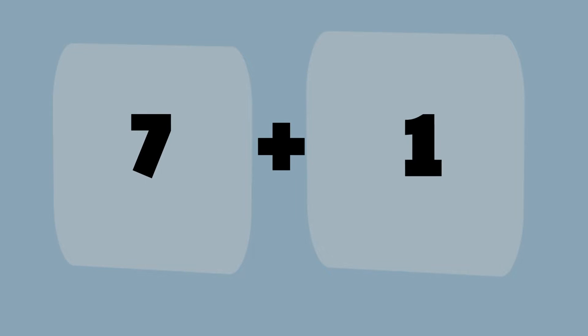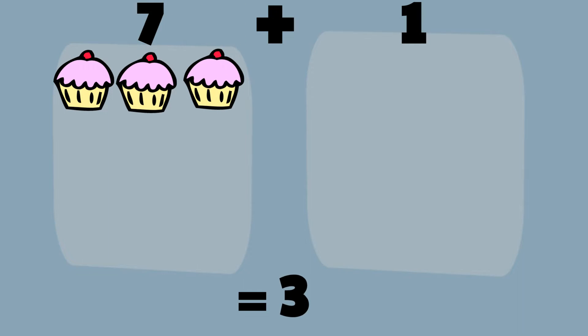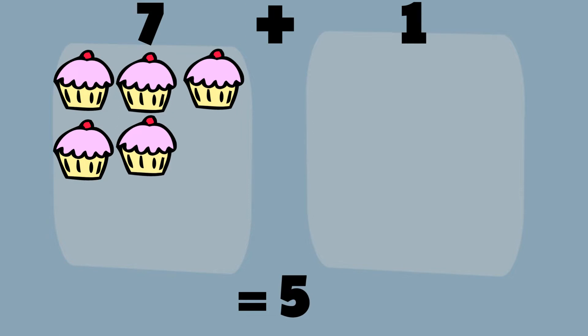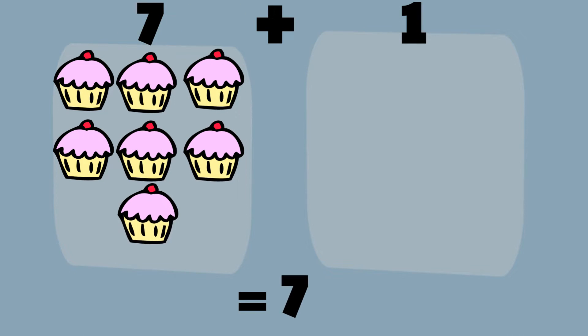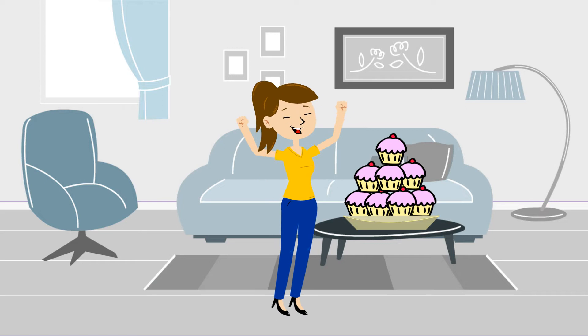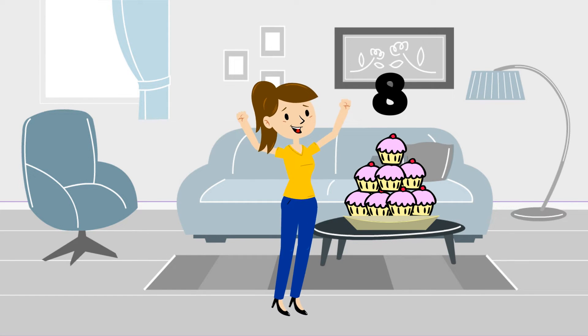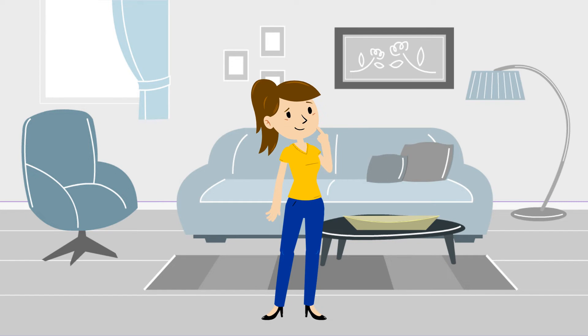How many cupcakes did she bake in total? Let's count: seven plus one cupcake. That is equal to one, two, three, four, five, six, seven, and eight. Jen baked eight cupcakes.